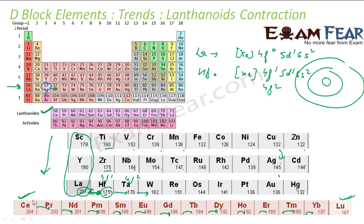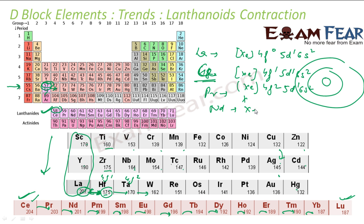So what is happening is the F orbitals are getting filled across the lanthanide series. From lanthanum to lutetium (the last element), the 4F orbitals become fully filled, then 5D1, 6S2. After lutetium, hafnium resumes filling the 5D orbitals — that's why hafnium is a D block element, while the lanthanides are F block elements.